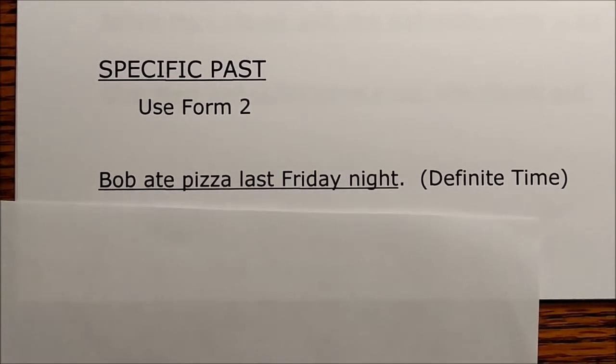The next tense is called the specific past tense. In this case we're talking about an action that happened in the past at a particular, specific time. We use Form Two of the verb 'to eat,' which is 'ate.' For example: 'Bob ate pizza last Friday night.' It shows it happened one time, in the past, at a very specific time.